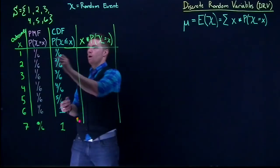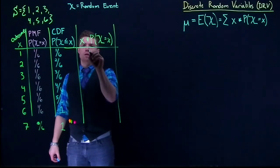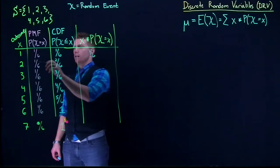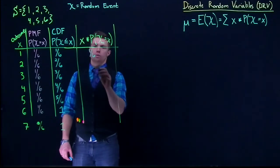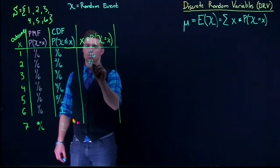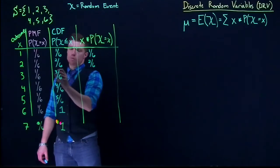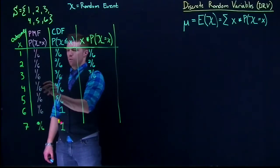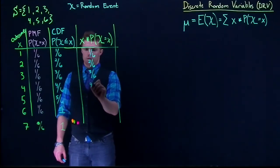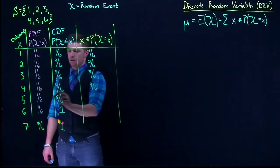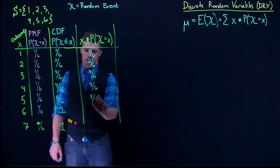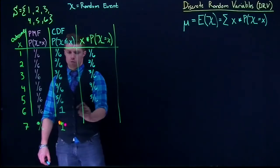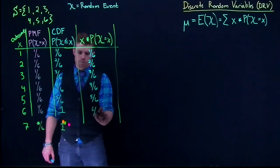So here we've got 1 times 1/6, which gives me 1/6. I've got 2 times 1/6, which is going to give me 2/6. I've got 3 times 1/6, 3/6, 4 times 1/6, 4/6, 5 times 1/6, 5/6, and 6 times 1/6, 6/6.